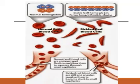On the left side you see the normal hemoglobin and normal red blood cells. They are compact and flexible, enabling them to squeeze through even the smaller capillaries. On the right side, we see the sickle cell hemoglobin.